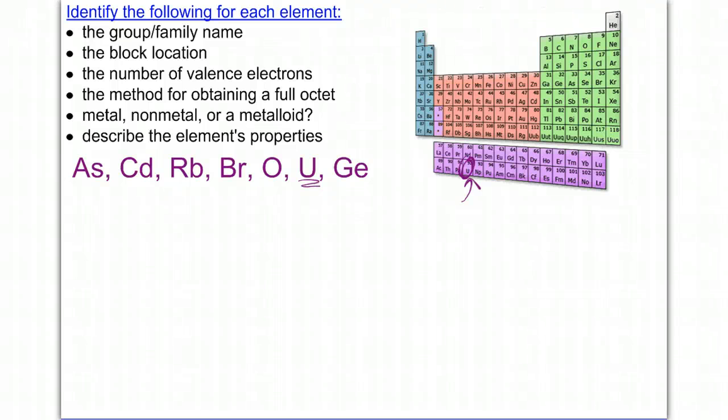Uranium is going to be located in the actinide series down here, which means it's radioactive for starters. So we'll say it's in the actinides or actinoid, as it's sometimes called. It's in the F block. Valence and method of obtaining a full octet are not going to be applicable here. It is, however, considered a metal, and again, it's radioactive and will exhibit typical metallic properties.